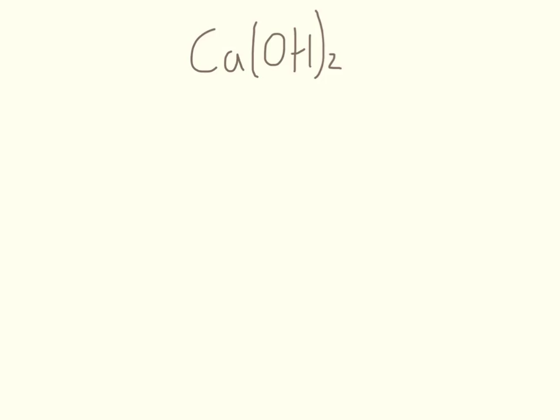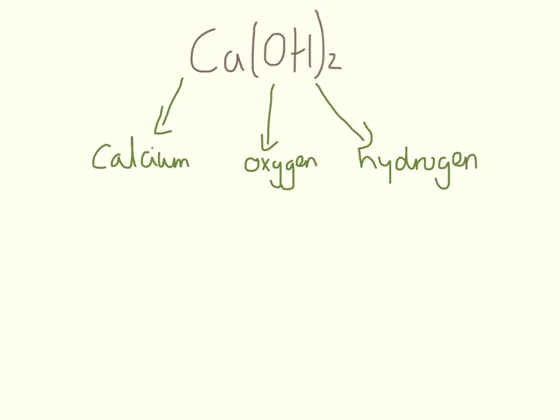Now we get a bit more complicated because we have these brackets here, Ca(OH)2. Let's start by identifying the elements: calcium, oxygen and hydrogen. Calcium doesn't have a number after it, so there is one. We have oxygen and hydrogen in the brackets with a two after it, so there are two of everything inside the brackets. So there are two oxygens and two hydrogens. We have three elements and five atoms.